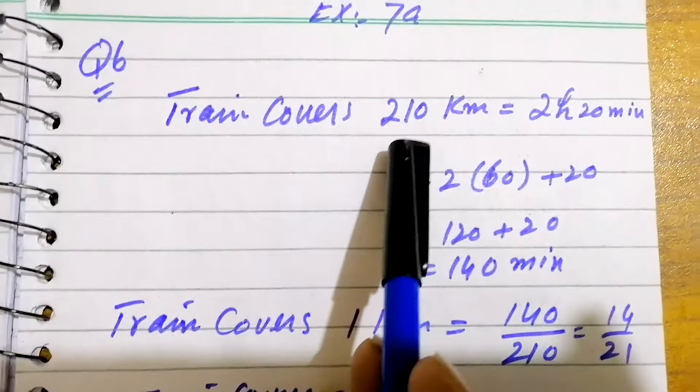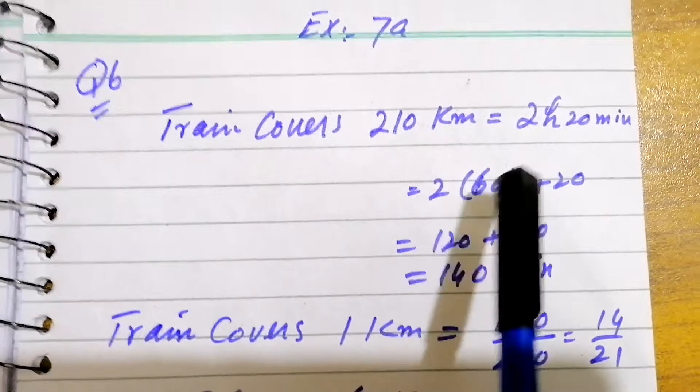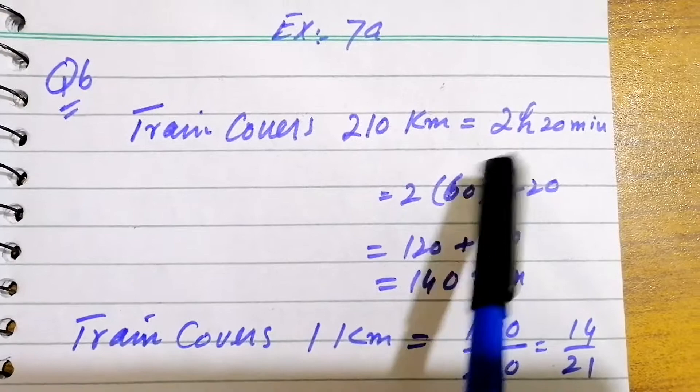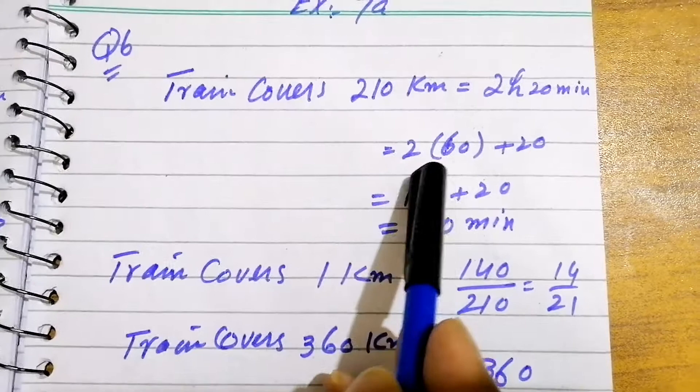We convert these hours into minutes. 1 hour has 60 minutes, so we write here 2 multiply 60 plus 20. Then, 6 to the 12, 120 plus 20, 140 minutes total. So 2 hours 20 minutes are equal to 140 minutes.